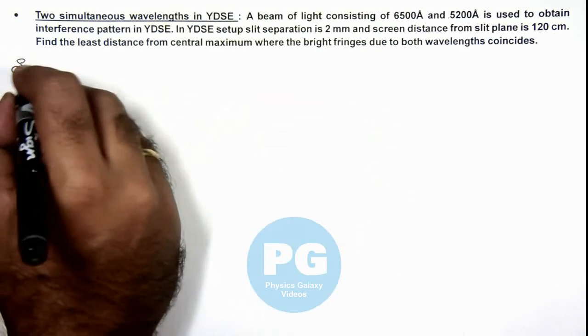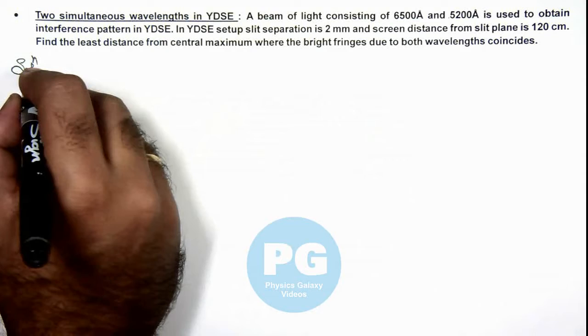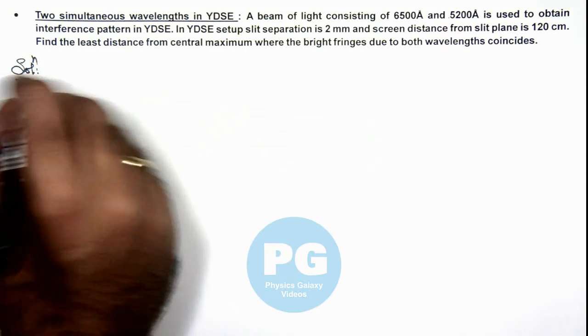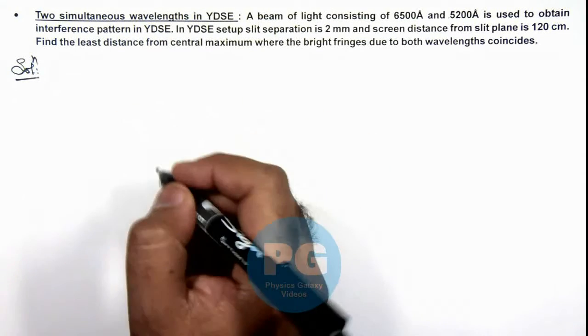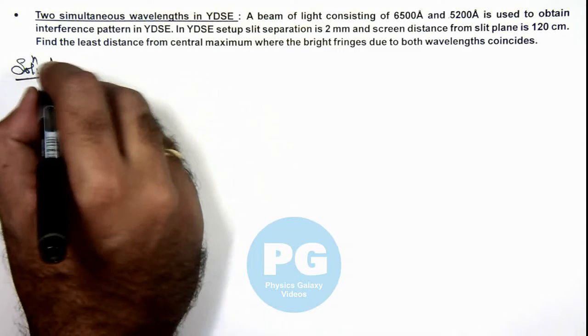So we can directly use the relation of distance of bright fringes from center of screen in YDSE we already studied. So we can write, as we know.